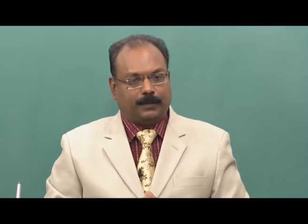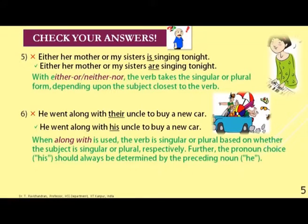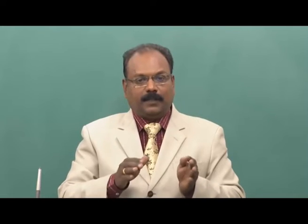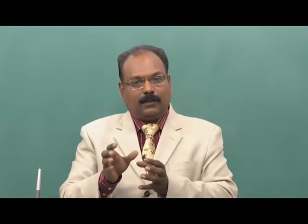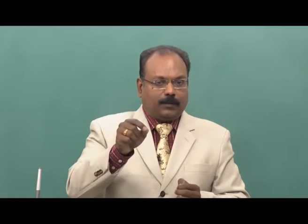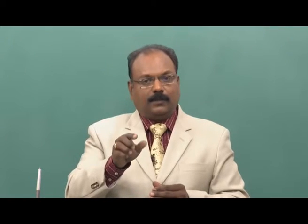With 'either...or' and 'neither...nor', the verb takes singular or plural form depending on the subject closest to the verb. The wrong usage is: 'Either her mother or my sisters is singing tonight.' Since 'sisters' is the subject closest to the verb, the correct form is: 'Either her mother or my sisters are singing tonight.' Her mother is singular, my sisters are plural, and the verb agrees with the closest subject.